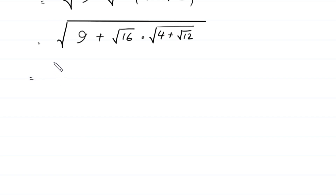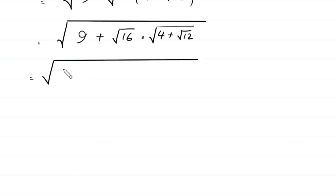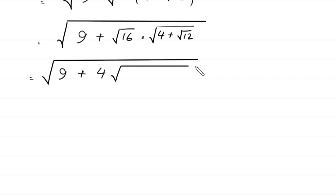Next, square root of 9 plus — this square root of 16 is 4 — so we have 4 times square root of (4 plus square root of 12).